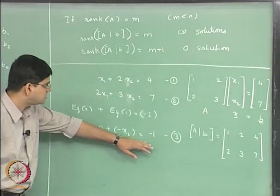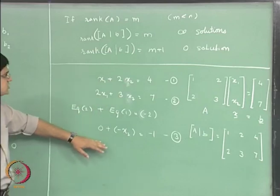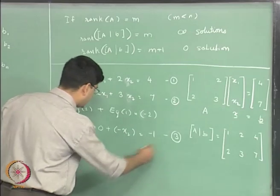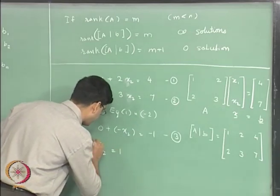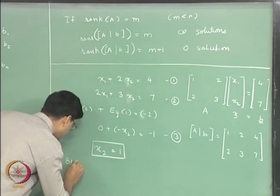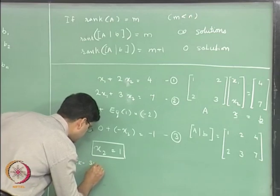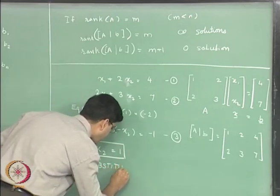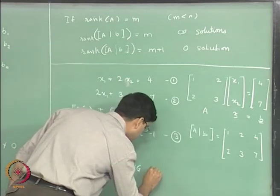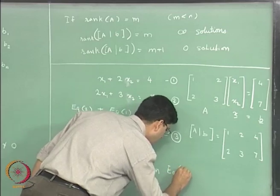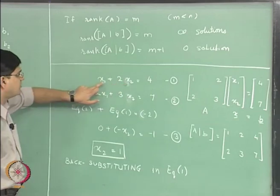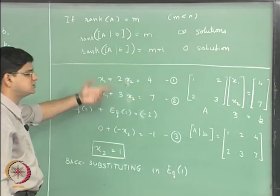Now using equation 3 and equation 1 together we can then solve these equations in order to get the solution. So of course, the one solution over here is x2 equal to 1, and then back substituting in equation 1, we put x2 equal to 1. So x1 plus 2 equal to 4 and x1 equal to 2.